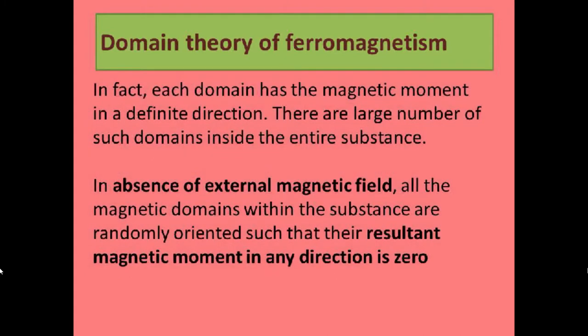Each domain has a magnetic moment in a definite direction. There are a large number of such domains inside the entire substance. In the absence of an external magnetic field, all the magnetic domains within the substance are randomly oriented, such that the resultant magnetic moment in any direction is zero.